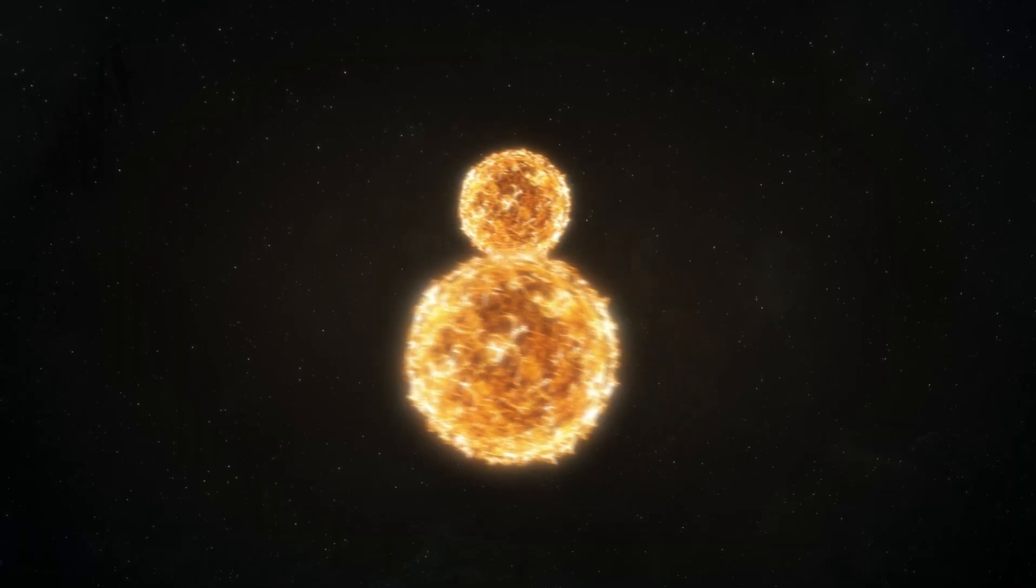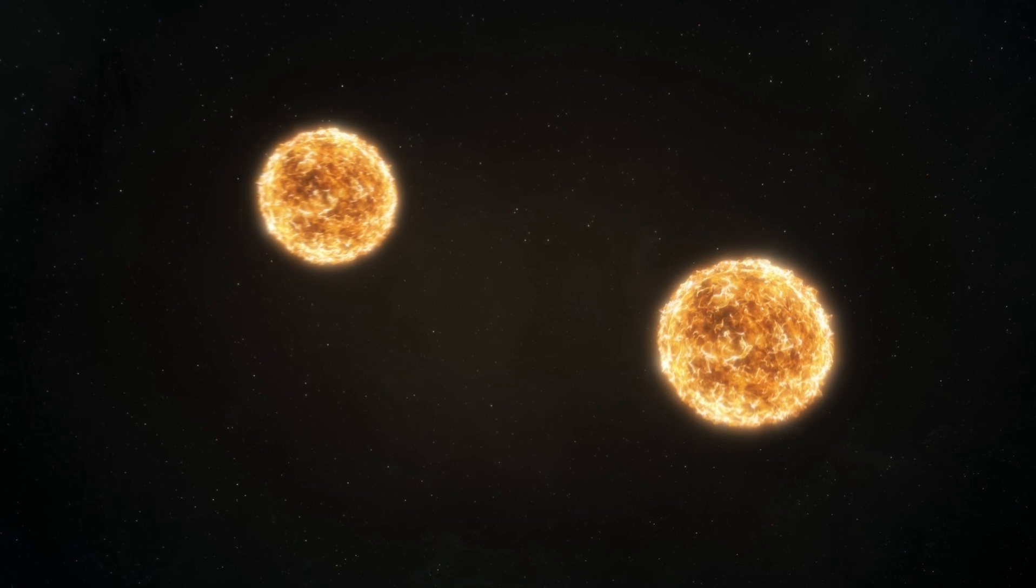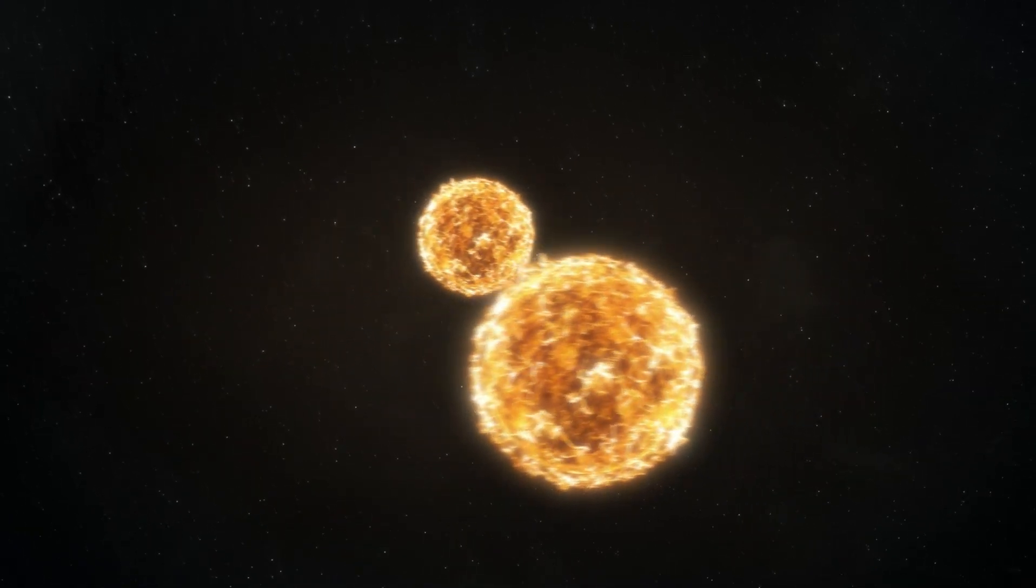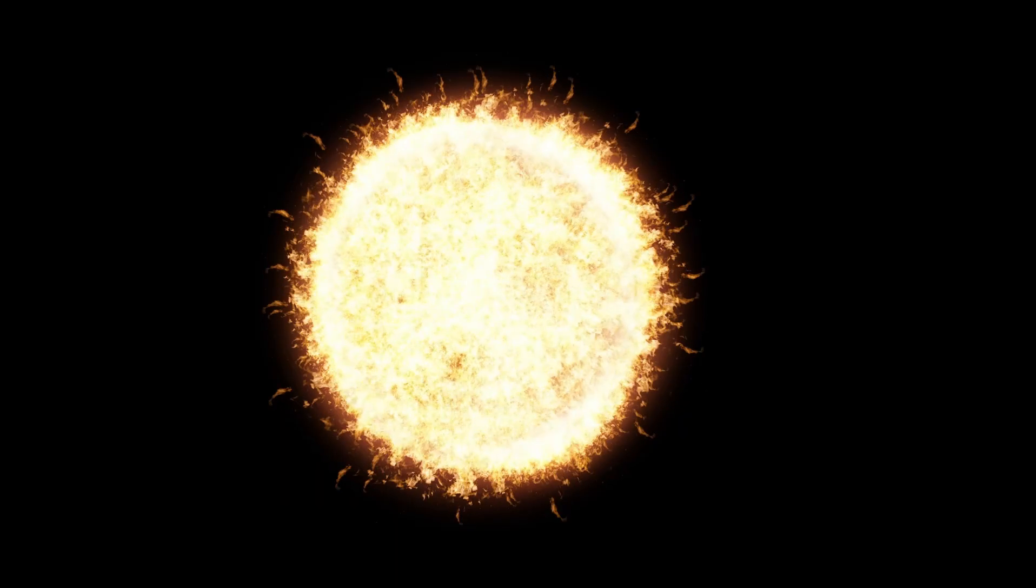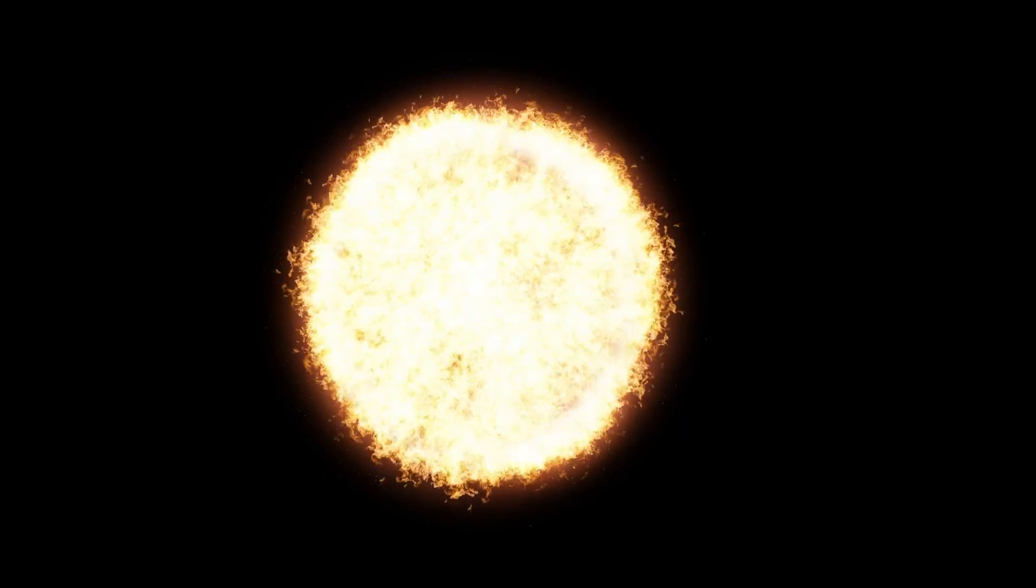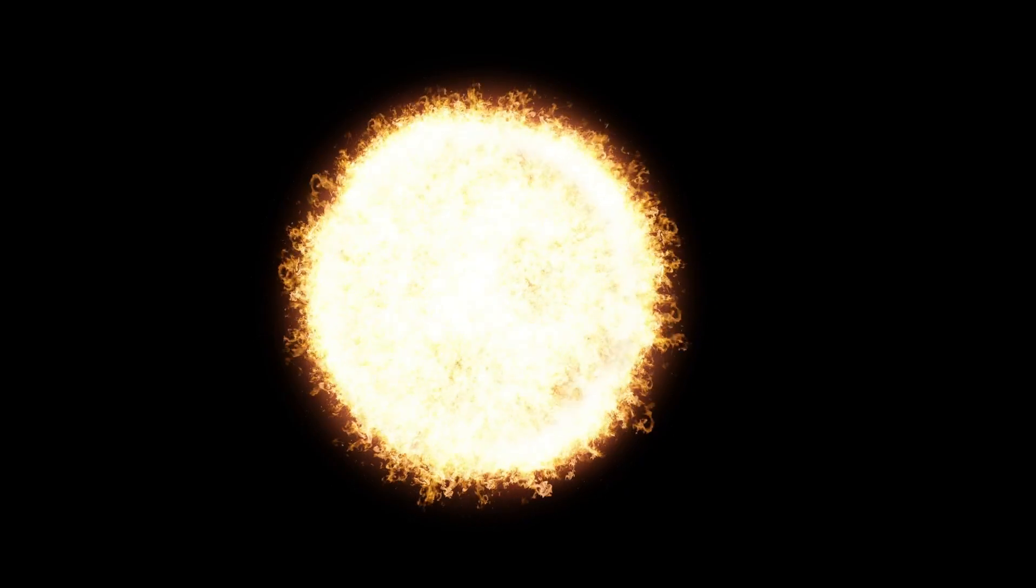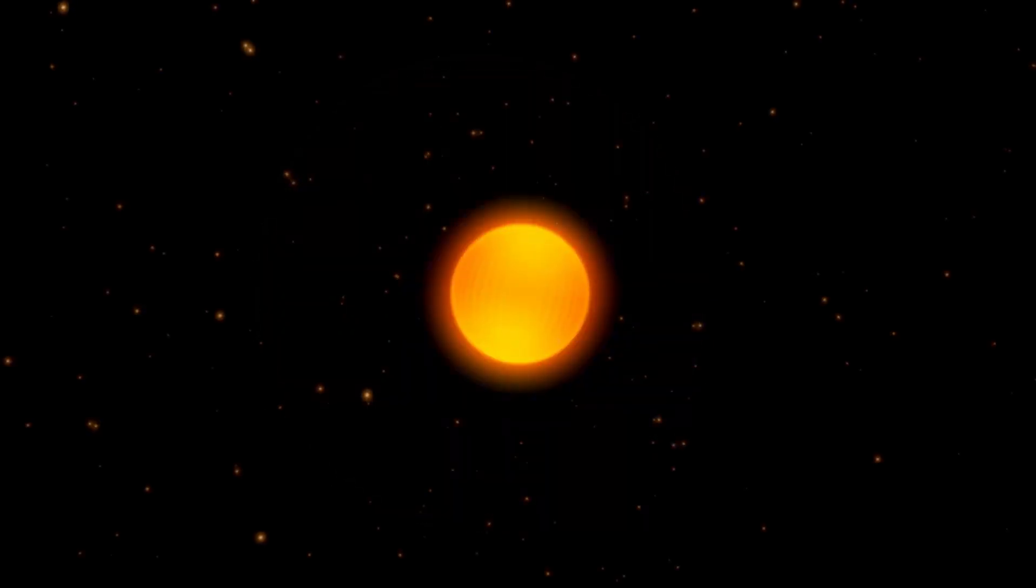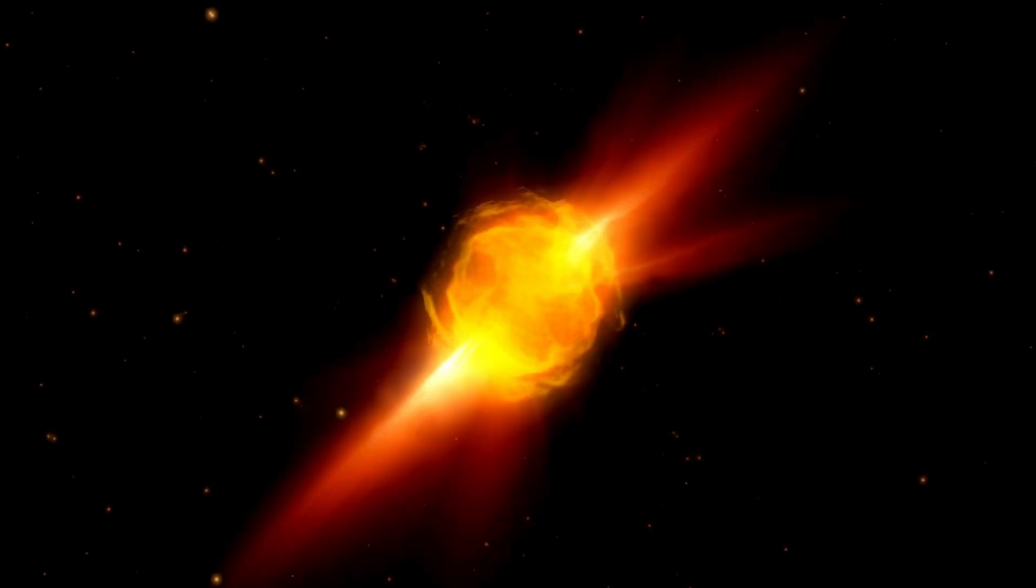Betelgeuse's surface is also covered in dark spots, also known as star spots or magnetic spots, which are areas on the surface of the star where the magnetic field is particularly strong. These regions are cooler than the surrounding gas because the magnetic field inhibits the flow of hot gas from the star's interior to its surface. This creates a cooling effect that makes the spots appear darker than the surrounding gas.